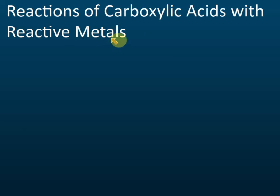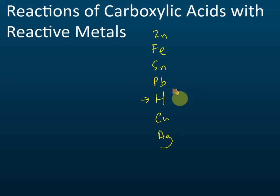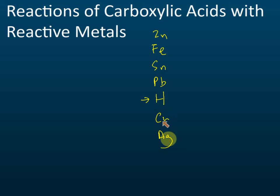How do we know if a metal is reactive or not? A reactive metal is a metal higher than hydrogen in the reactivity series. For example, the series includes iron, zinc, and so on. Hydrogen sits between lead and copper, so all metals higher than hydrogen are considered reactive metals, and they can react with acid. Metals lower than hydrogen cannot react with acid.